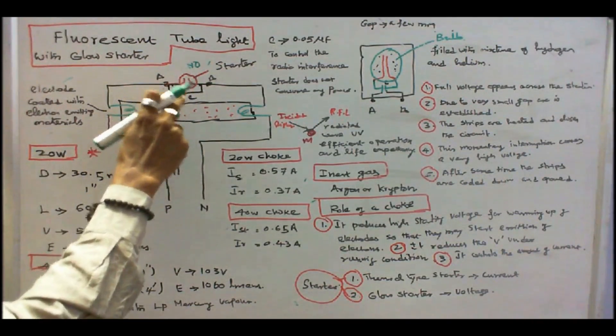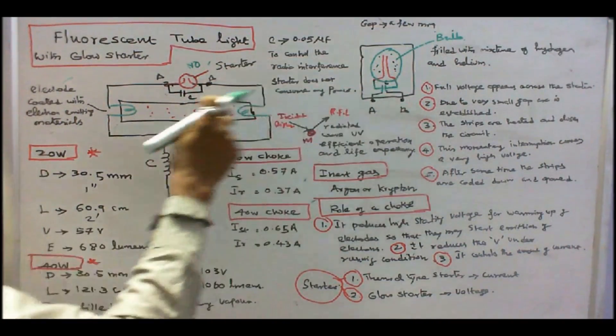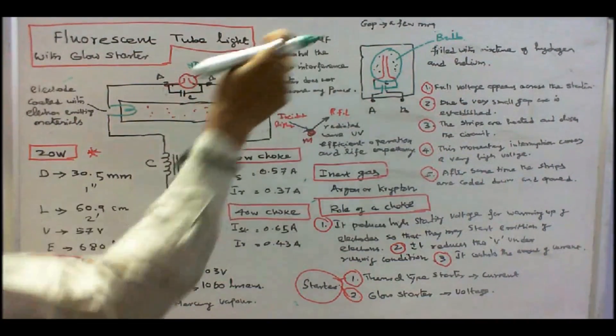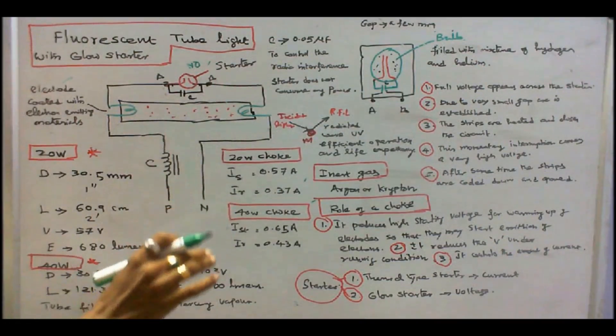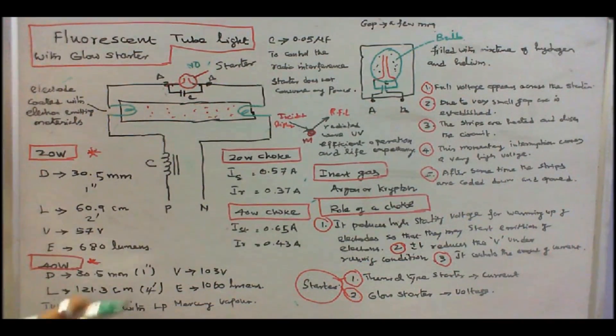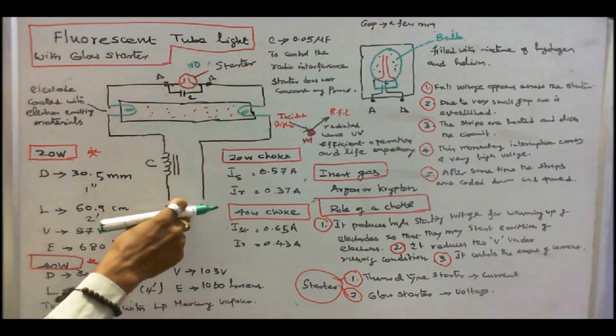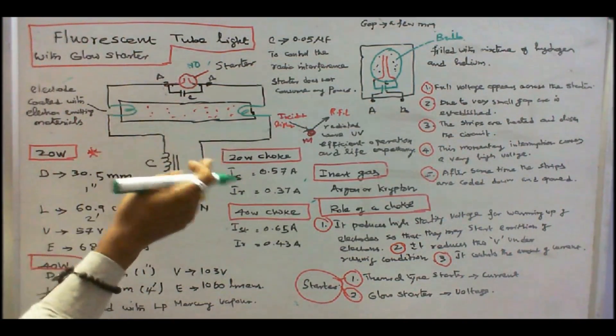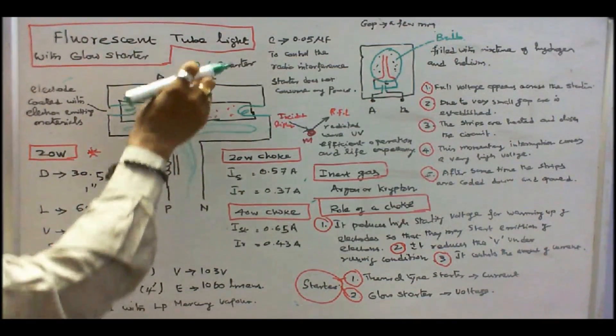Here, in between these two points, that is, metals, we are connecting one capacitor. That is 0.05 microfarad, to control the radio interference. And moreover, the starter does not consume any power. So, that is why, while we switch on 230 volts, so there is a momentary interruption, 1000 volts, ionization takes place, current goes like this, even if you remove the starter. The circuit is removed.